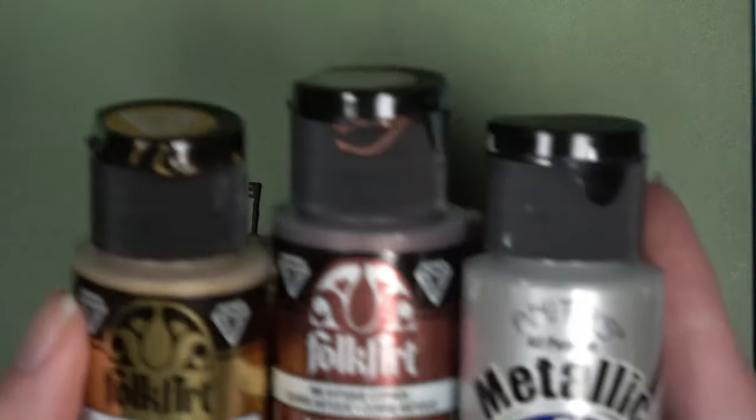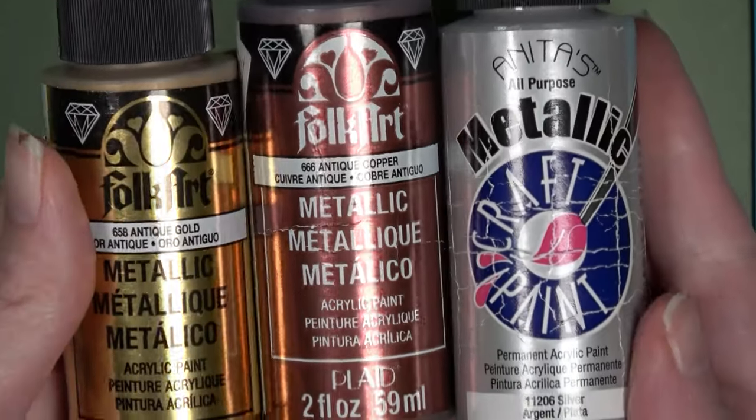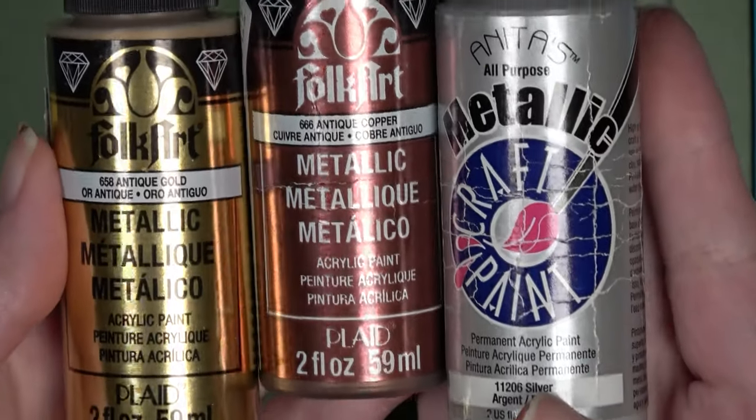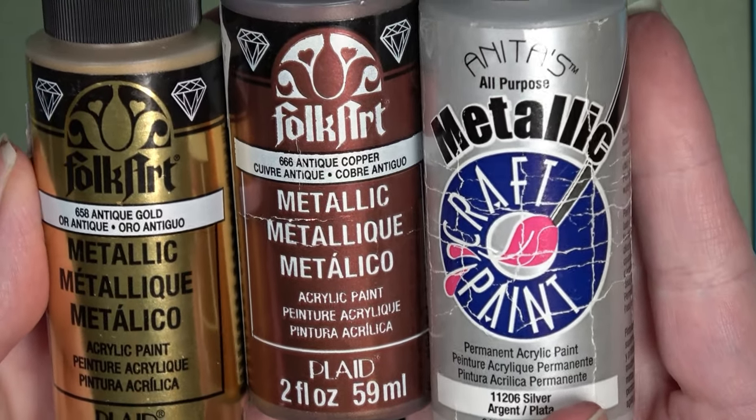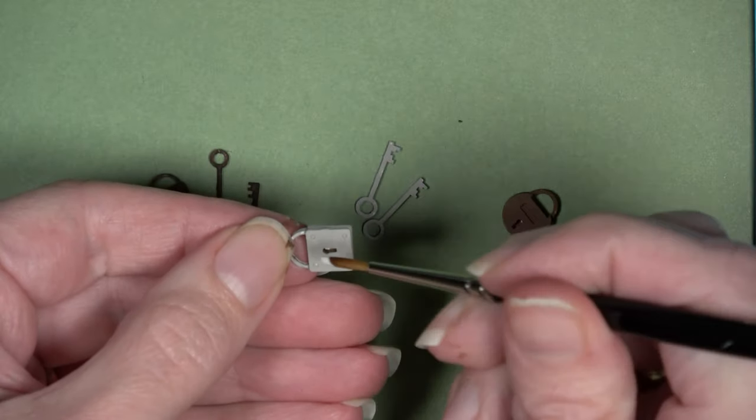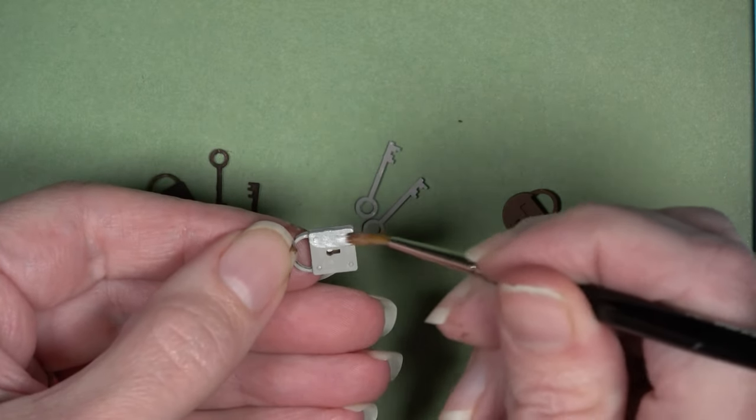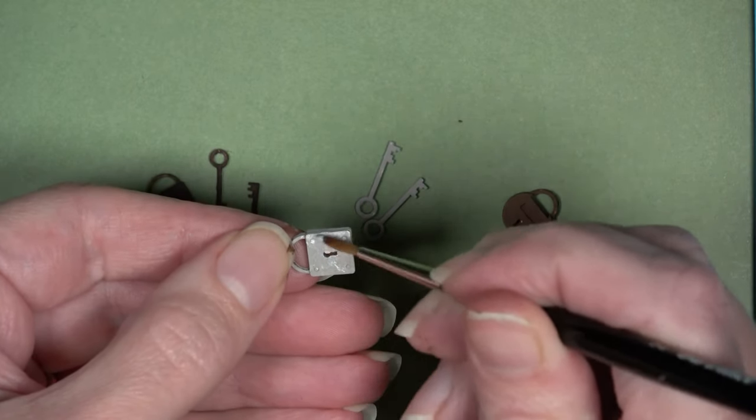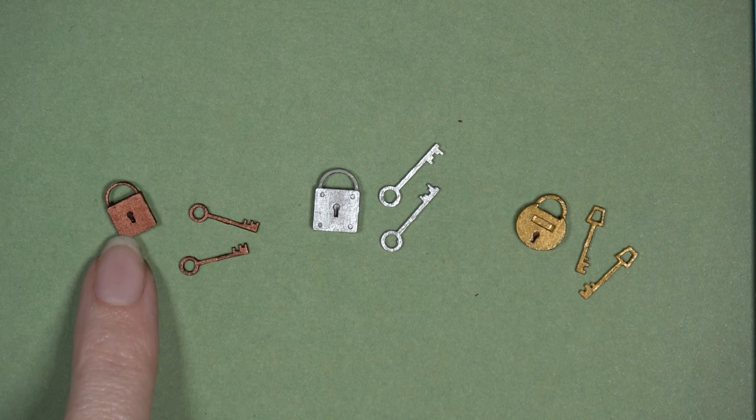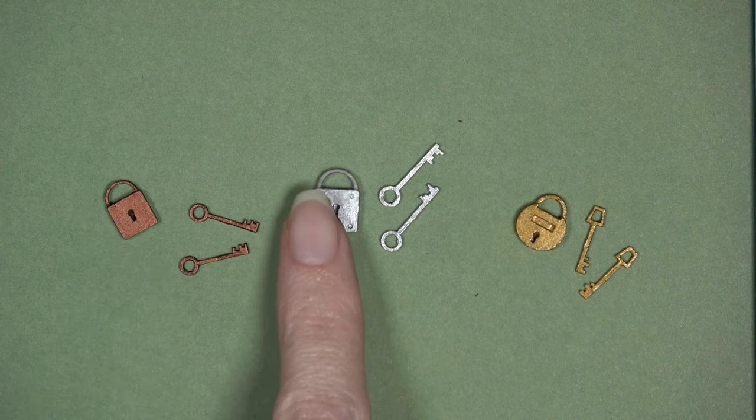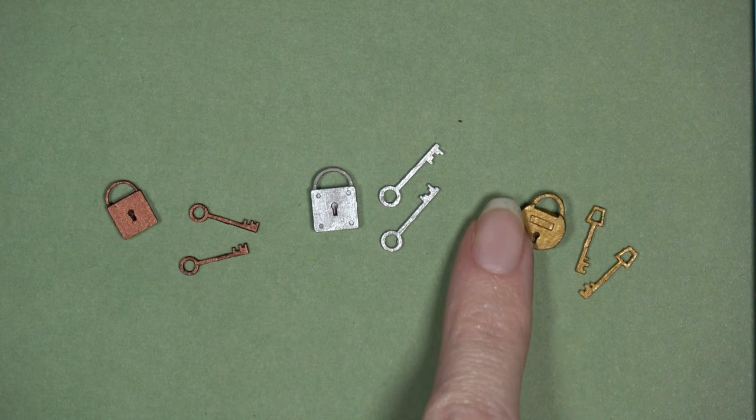And then my second coat of paint is going to be a metallic paint. Metallic always does better when it's on top of a base coat instead of just a plain white surface. Of course you can finish your lock and keys however you like, but this is how I tend to do mine and I really like how they turned out. All three of these are done with a different metallic paint, and so you can see how they really start to look like totally different locks even though they're made out of the same exact material.